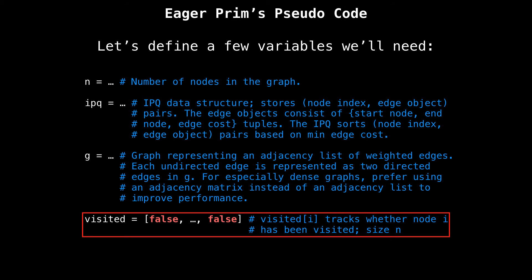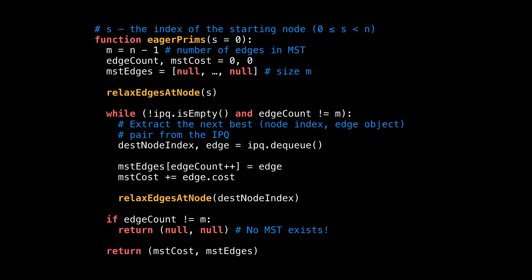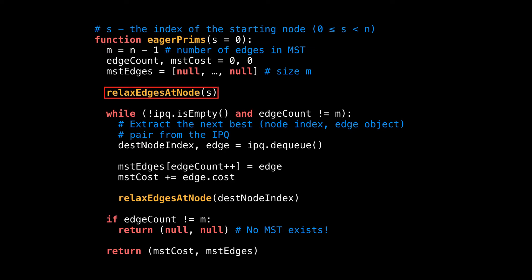Back to the pseudocode. The last variable is the visited boolean array of size N, which tracks whether node I has been visited or not. In the first block, I define a few more variables: M — the number of expected edges in the MST; edge count — the number of edges currently included in the MST, used to ensure the tree spans the whole graph; MST cost — which tracks the total cost of our minimum spanning tree; and MST edges — an array holding the edges included in the MST. After this, I call the relax-edges-at-node method, passing in the start node as an argument. Let's have a look at that method.